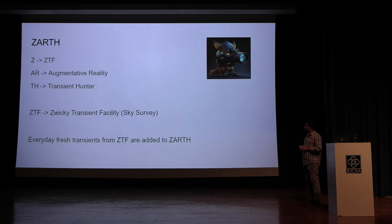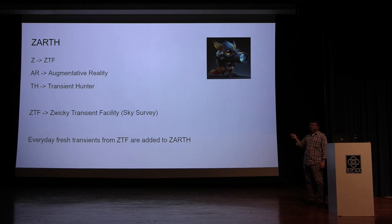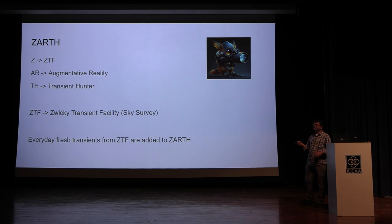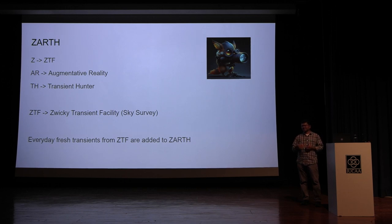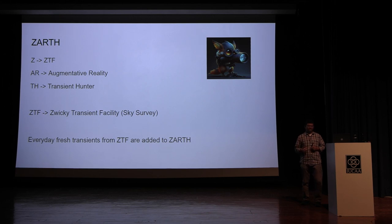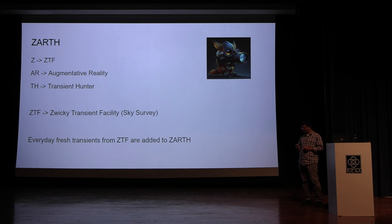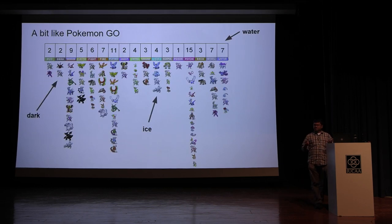That brings me to ZARTH. The Z stands for ZTF — the Zwicky Transient Facility — AR stands for Augmented Reality, and TH stands for Transient Hunter. This is our game where we let you hunt for transients in the sky. Every day, fresh transients from ZTF are added to ZARTH, provided ZTF took data the previous night. New data sets are put in at zero UTC — that's 5:30 am in India — so if you look at that time you'll find new transients.